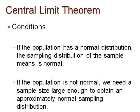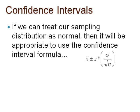Large enough depends on how non-normal our population is. We saw that when n equaled 30, the sampling distribution of the sample means were approximately normal even when the population distribution was extremely non-normal. If we could treat our sampling distribution as normal, then it will be appropriate to use the confidence interval formula that we have learned already, and we know that our interpretations will be accurate.